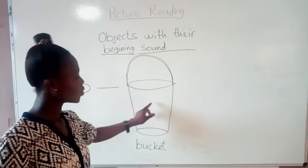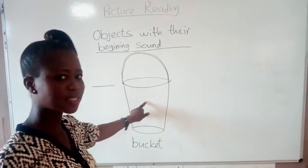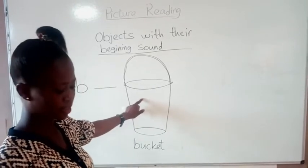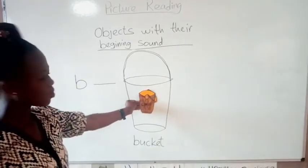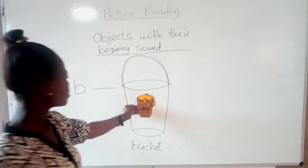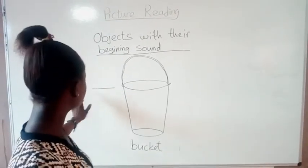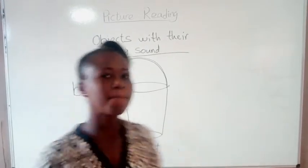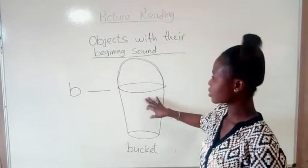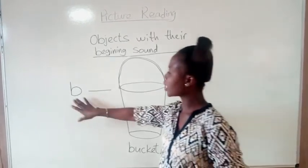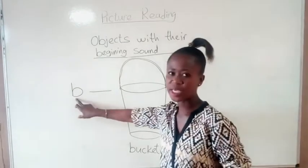So B is for this object. Hope you know it — we all have it in our houses. It is a bucket. This is a bucket. So B is for bucket. The sound for B is B. B, buckets. So now we know that B is for bucket and the sound for B is B.